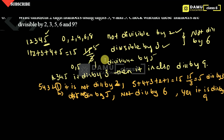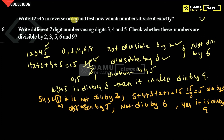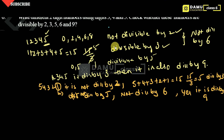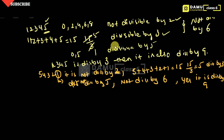Next question: write different 2-digit numbers using the digits 3, 4, and 5. Check whether these numbers are divisible by 2, 3, 4, 5, 6, and 9. So using digits 3, 4, and 5, we form 2-digit numbers. The combinations are: 34, 43, 54, 45, 35, and 53.